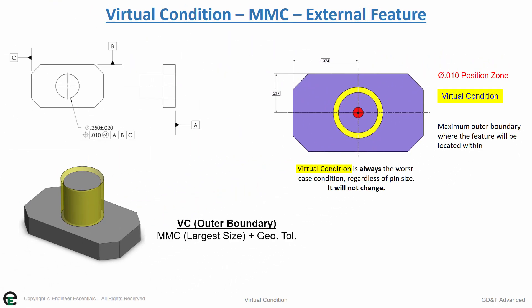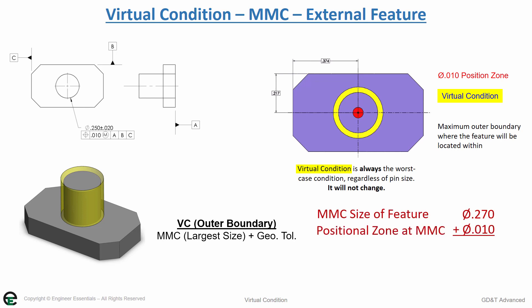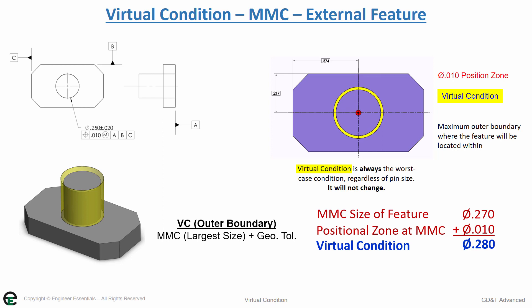To calculate the virtual condition, we take the MMC, the largest size, plus the geometric tolerance. This is .270 plus .010, which gives us .280. This means that there's an imaginary cylinder surrounding this pin of .280 that no point on the surface can ever cross. This helps us calculate the hole size that would assemble, meaning we'd have to have a hole that's always larger than .280 to always ensure that the part would fit into it.